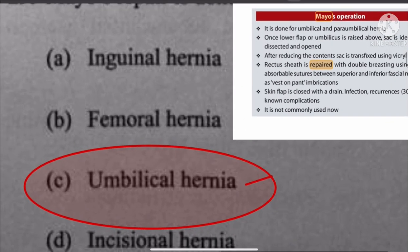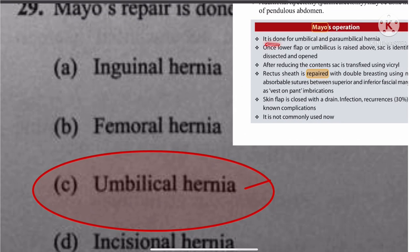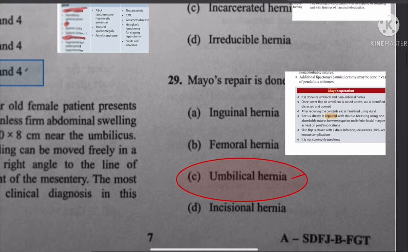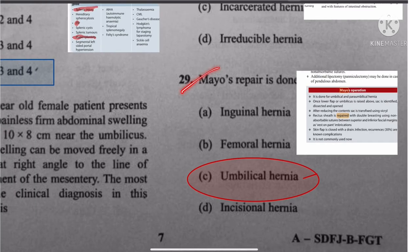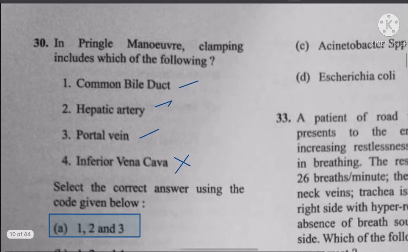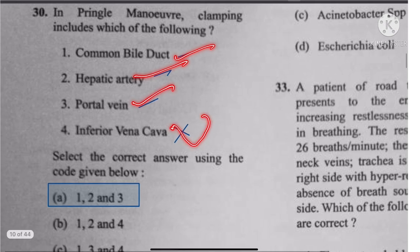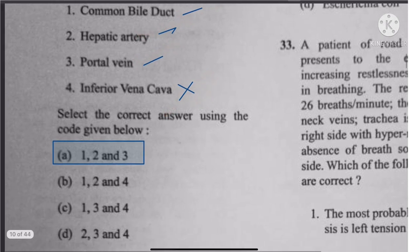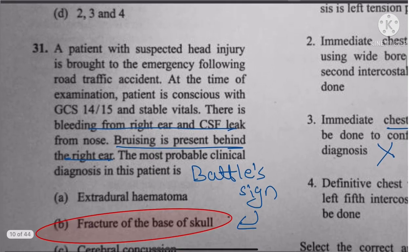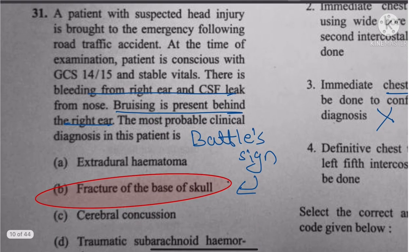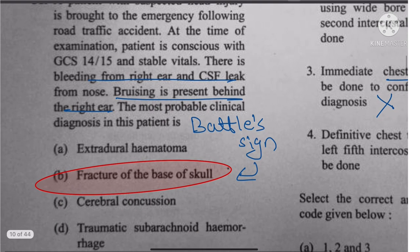Question 29: Mayo's repair is done for umbilical and paraumbilical hernias. Question 30: In Pringle's maneuver, we clamp the common bile duct, hepatic artery, and portal vein. There is no clamping of the IVC.